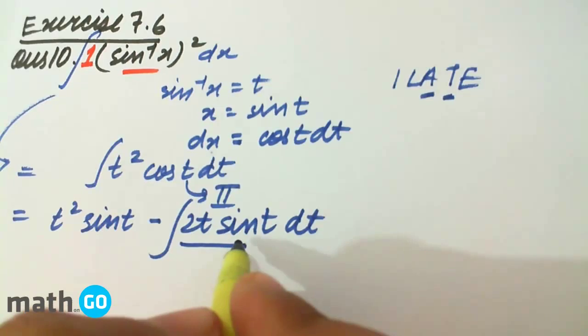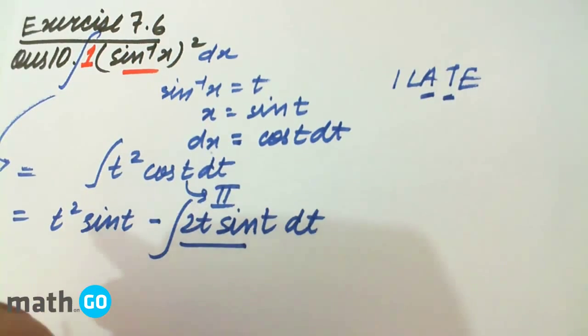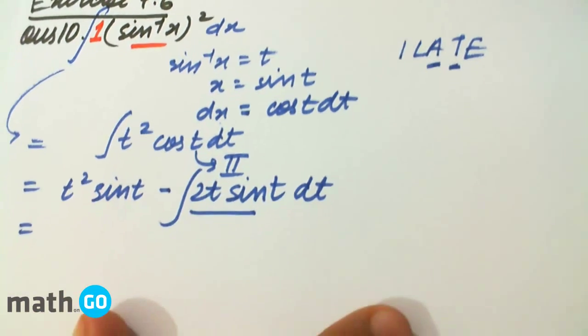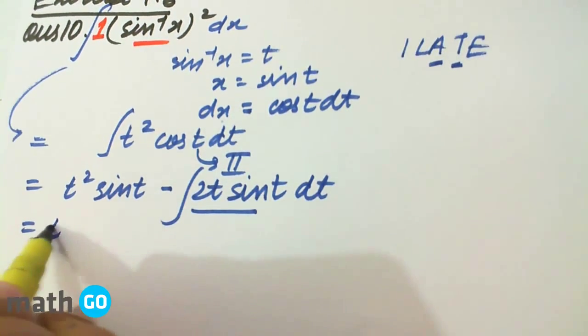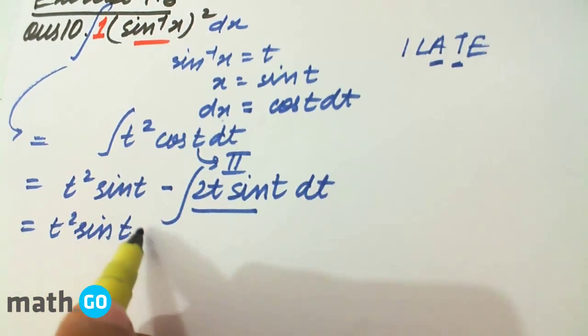Okay? Again this is of the form u into v, so we again integrate it by parts. So what do we get? t square sin t as it is minus...